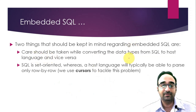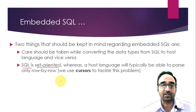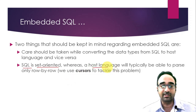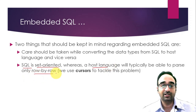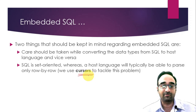The second concern is that SQL, or the DBMS, is set-oriented - meaning it works on two-dimensional data structures like tables or two-dimensional arrays. Whereas a host language like C can only work on one-dimensional data, reading only one row at a time. So your SQL works with two-dimensional data and your host language works with only one-dimensional data. To solve this problem, you can use something called a cursor, which converts the two-dimensional data into one-dimensional by reading the data row by row.